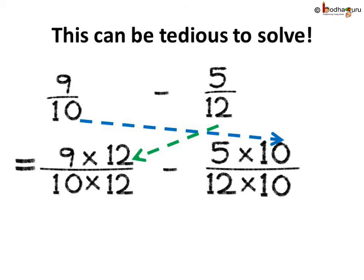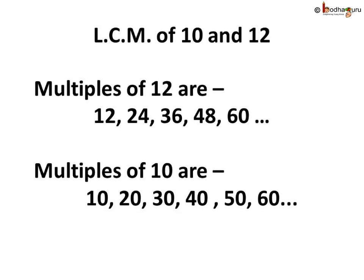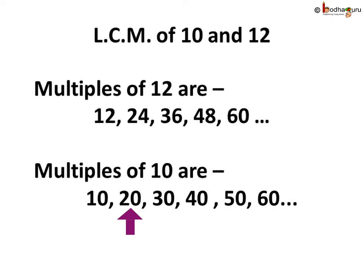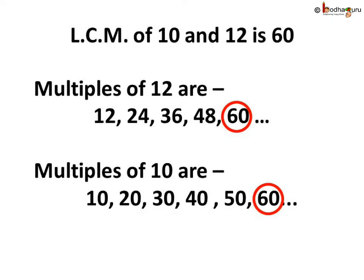Yes, there is. The simplest way is to find the LCM of the two denominators, which are 10 and 12. The multiples of 12 are 12, 24, 36, 48, 60, etc. And the multiples of 10 are 10, 20, 30, 40, 50, 60. So the least common multiple, or the LCM, of 10 and 12 is 60.